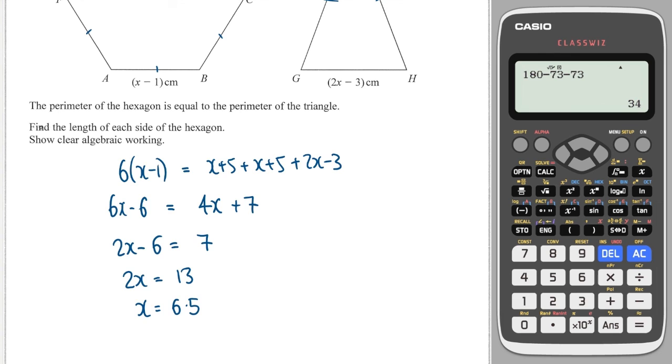What does the question actually ask? Always go back to see what the question asks, because it's normally not just find x. It says find the length of each side of the hexagon. We know it's x minus 1, so the length is equal to x minus 1, which is equal to 6.5 minus 1, which is equal to 5.5.